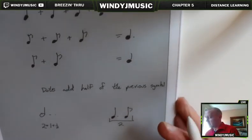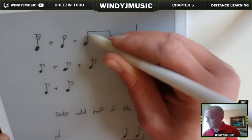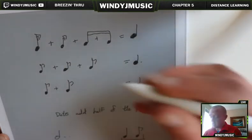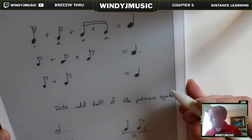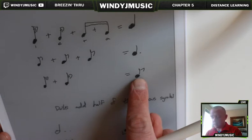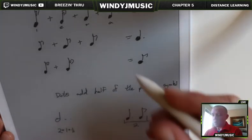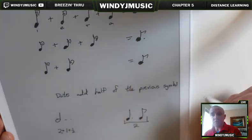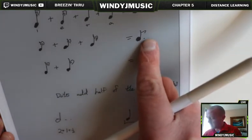You'll also see dotted eighth notes, and those situations happen when you're dealing with even smaller notes — sixteenth notes. With sixteenth notes you have double beams or double flags. Four sixteenth notes equals only one beat, counted as 'one-e-and-a.' Two sixteenth notes equals one eighth note. So if you want three sixteenth notes worth, you get a dotted eighth note — two sixteenth notes plus the extra half represented by the dot.